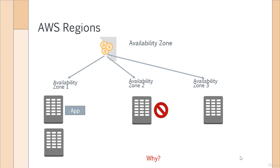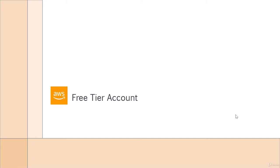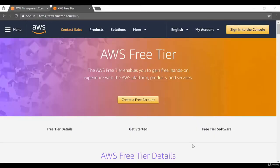Now that we've understood the basic concepts of regions and availability zones, let's mark an end to this chapter and move on. Hi and welcome back. In this chapter, we're going to go through the free tier account. Here I've just opened the documentation for the free tier which is available from AWS.